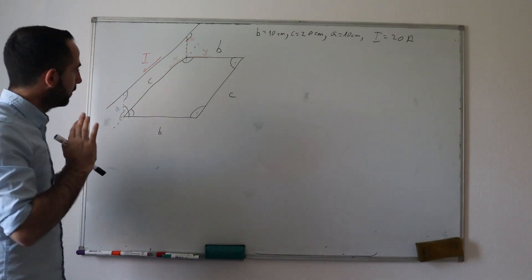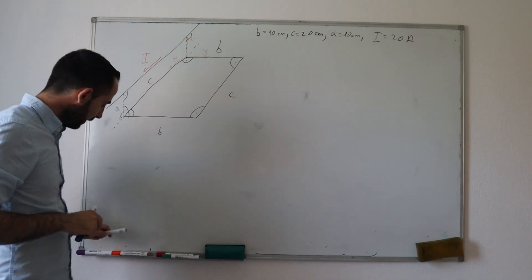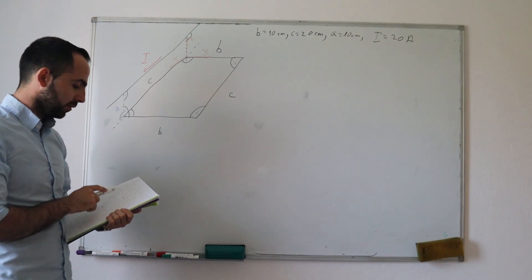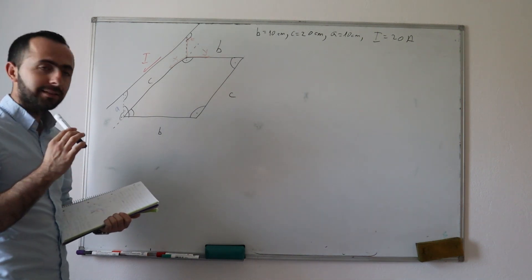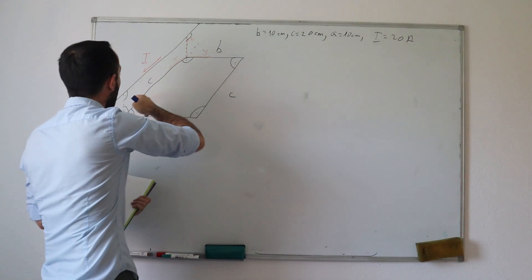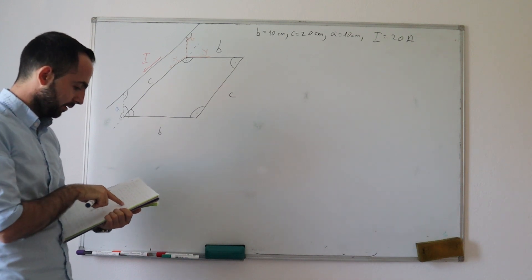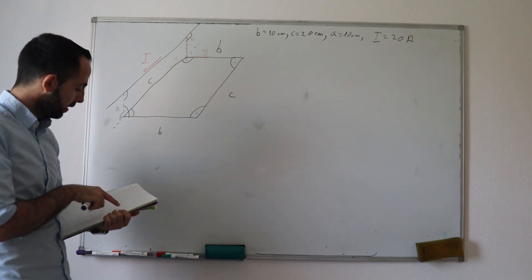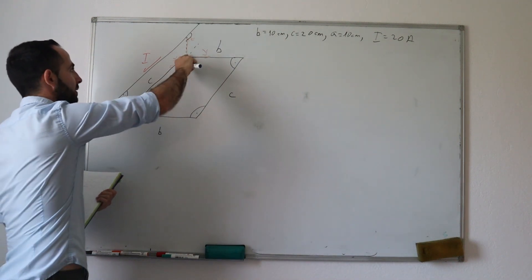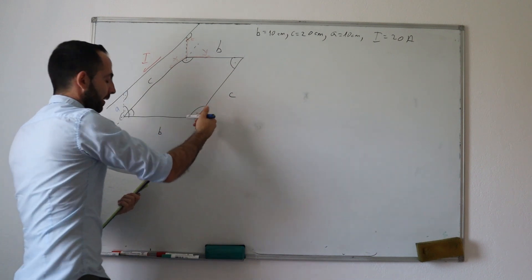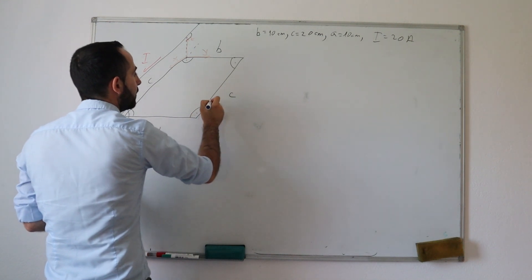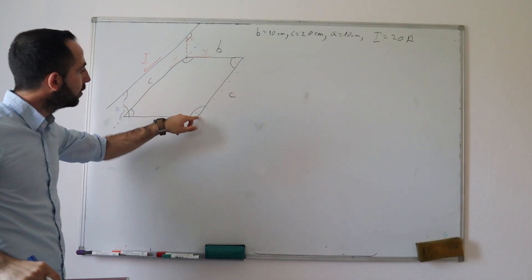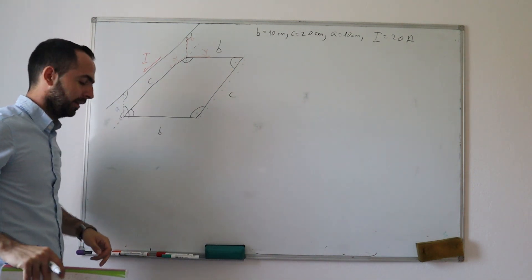We are looking at the picture from a different angle. We need to determine the magnetic flux density vector at points of the conductor with length C. The following text says it is placed parallel to the x-axis at distance B, which means we need to calculate the magnetic flux density at these specific points.